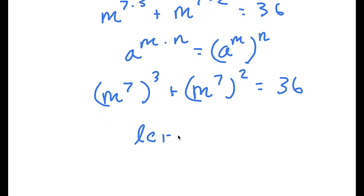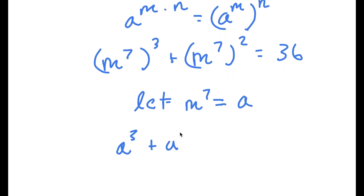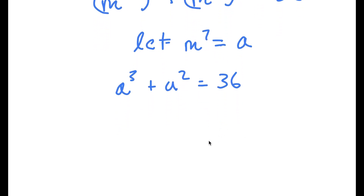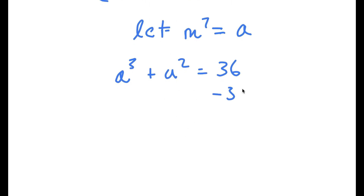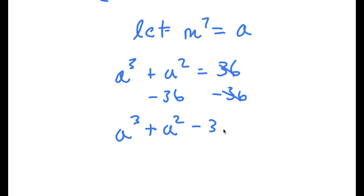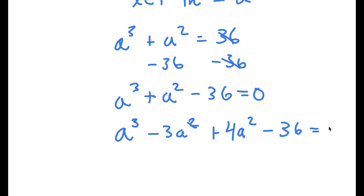Now I'm going to let m to the power of 7 equal a variable a. So now I have a to the power of 3 plus a squared is equal to 36. I'm going to subtract 36 from both sides and get a to the power of 3 plus a squared minus 36 is equal to 0.